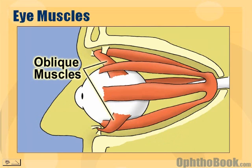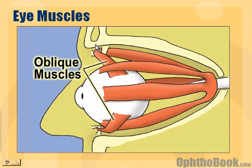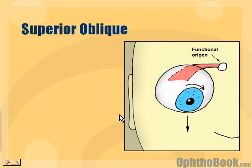We also have oblique muscles. There's a superior oblique — this muscle starts way back here at the annulus of Zen, comes all the way forward along the inner wall, the medial wall of the eye socket, goes through a little pulley here called the trochlea, and attaches sort of in the back of the eye. There's also an inferior oblique which doesn't go through a pulley — it actually attaches to the floor of the eye socket but also attaches to the back of the eye. And these oblique muscles make things very confusing.